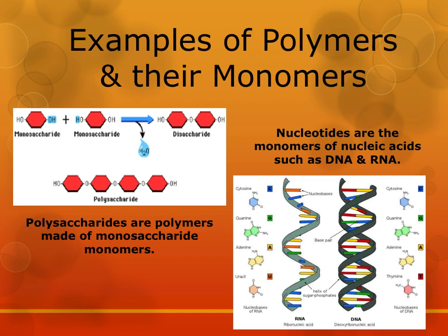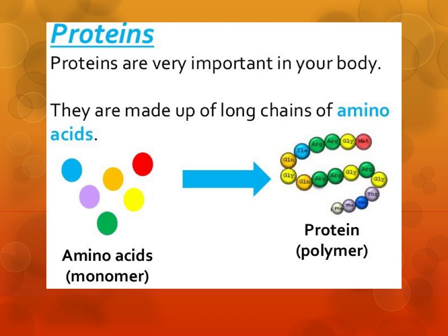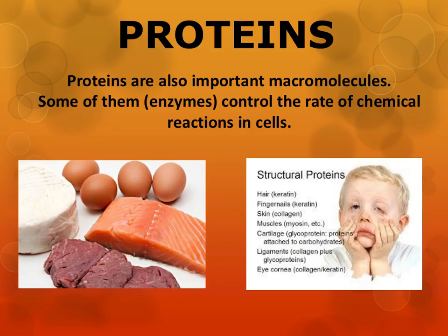Nucleic acids such as DNA and RNA are also polymers. Their monomers would be the nucleotides. Proteins are also polymers. Amino acids are the monomers — the building blocks of these particular macromolecules. Now let's focus on the functions of these molecules and some common examples too. Proteins are very diverse and carry out many different functions in living organisms. In class, we focus on enzymes, which are usually made of proteins.